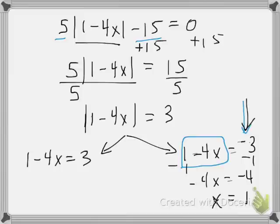And then over here on the right side, I'm also going to subtract 1 and get negative 4x equals 2. Divide both sides by negative 4 gives me negative 2 over 4.